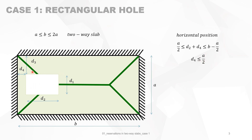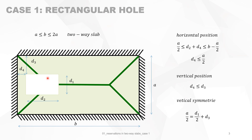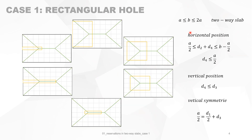The vertical position: for this type of reservation, the corner will always be within a specific triangle, so it will only cut this yield line. There is vertical symmetry, meaning the reservation is in the middle of the shortest side of the slab. So A over 2, or D3, equals A minus D1 divided by 2. These are all the conditions that define Case 1.